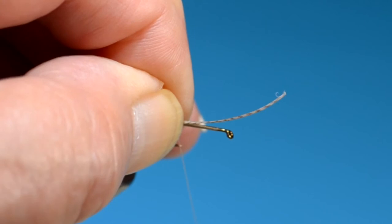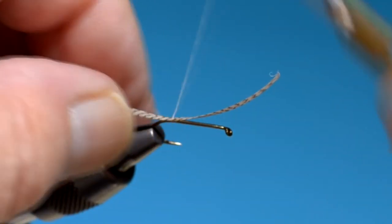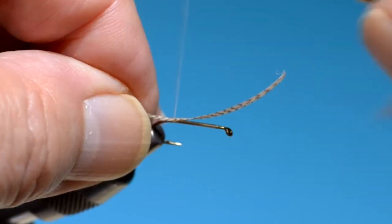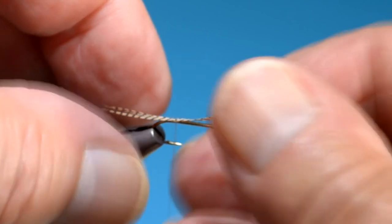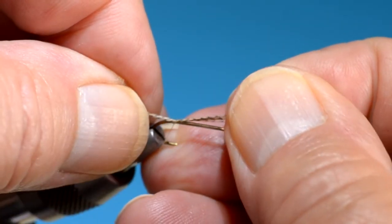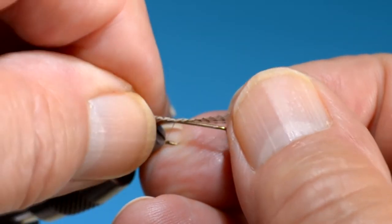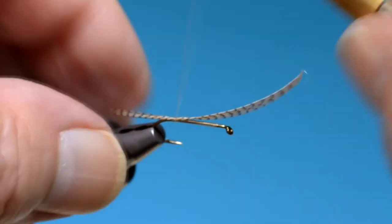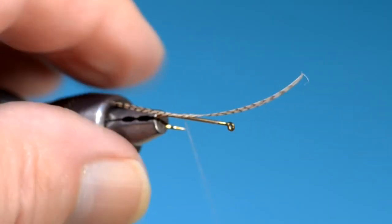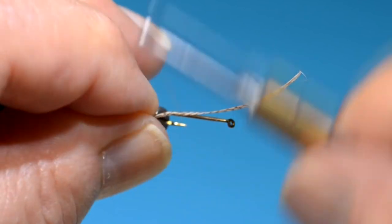Just a few wood duck fibers for the tail. I like them about shank length, and that was a little too long initially. I pulled it to length.